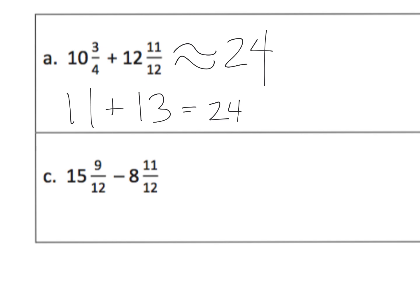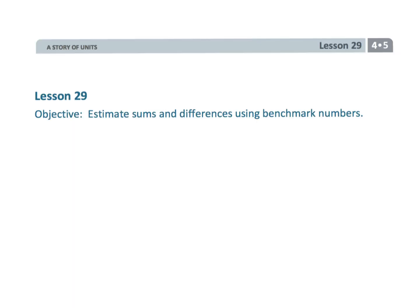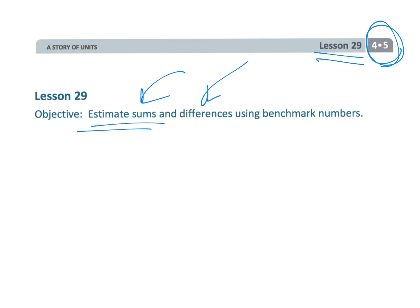Fifteen and nine-twelfths is about 16, and eight and eleven-twelfths is about 9, so that equals 7. Our approximation is 7. And that wraps up fourth grade, module 5, lesson 29 — estimating sums and differences using benchmarks.